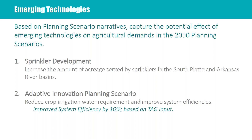The next adjustment was specifically for the adaptive innovation scenario — this was trying to move the dial based on language that really talked about collaborating and embracing new technologies. In an effort to capture what that may look like, we reduced the crop irrigation water requirement in this planning scenario alone by 10% and improved system efficiencies by 10% as well. It is something to keep in mind though — the adaptive innovation also has a hot and dry climate adjustment. So we are applying that hot and dry climate adjustment and then reducing that by 10%, basically trying to mitigate the impacts of what climate may do in the future in this particular planning scenario.